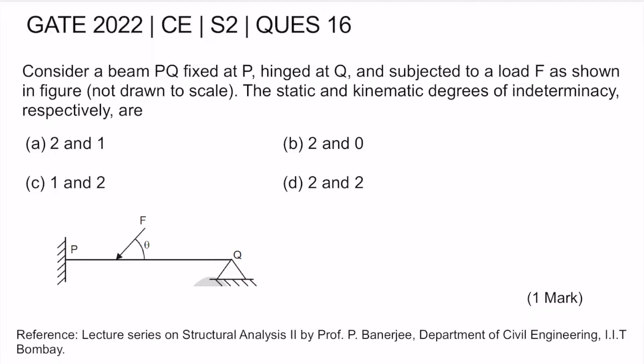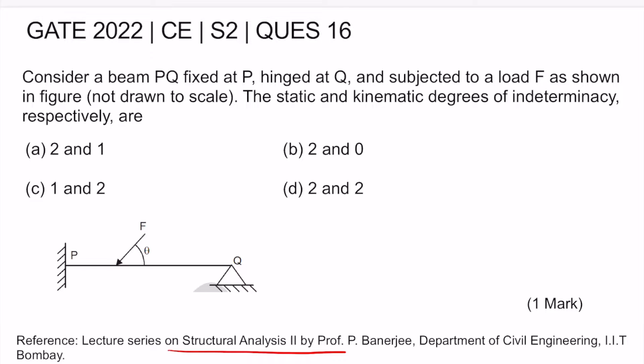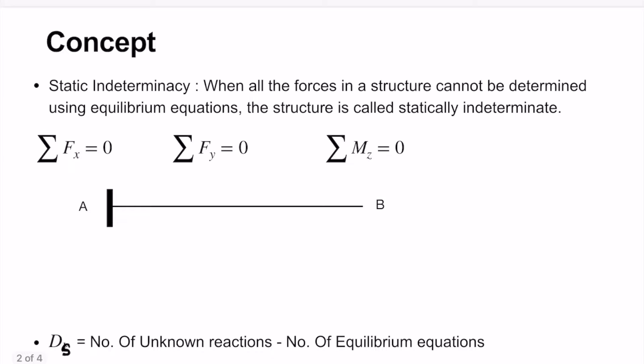There are four options and it is a one-mark question. For a detailed lecture on kinematic and static indeterminacies, you can refer to the lecture series on Structural Analysis 2 by Professor P. Banerji, Department of Civil Engineering, IIT Bombay. Let us start with the solution. A structure is called statically indeterminate when all the forces in it cannot be determined using equilibrium equations alone.